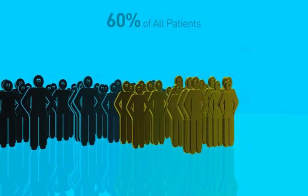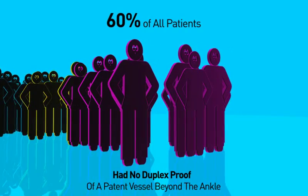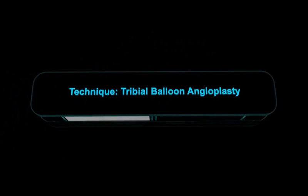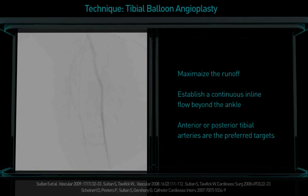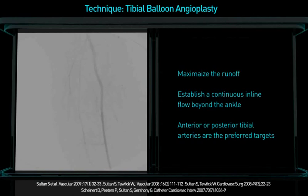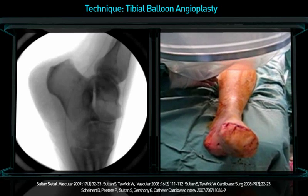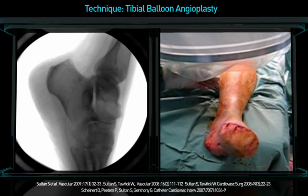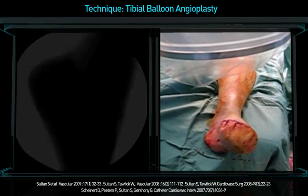60% of all patients had no duplex proof of patent vessel beyond the ankle. The main goal was to maximize the runoff and establish continuous inline flow beyond the ankle. The anterior and posterior tibial arteries are the preferred targets.